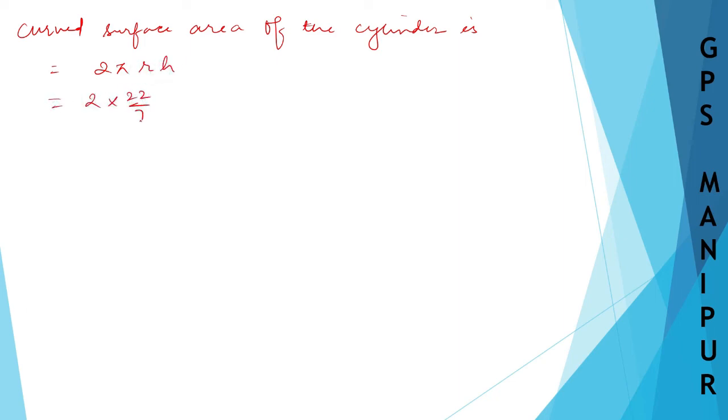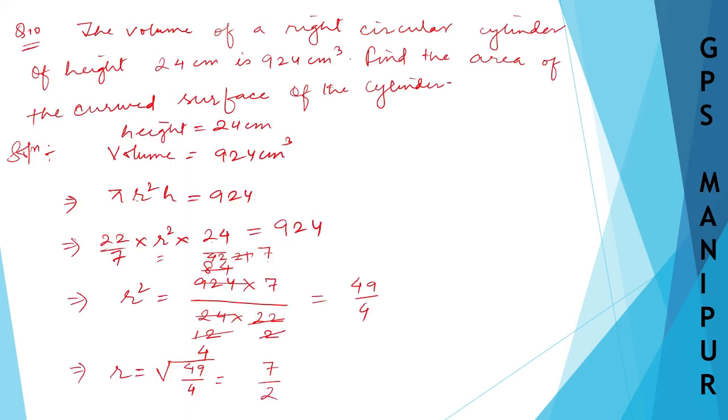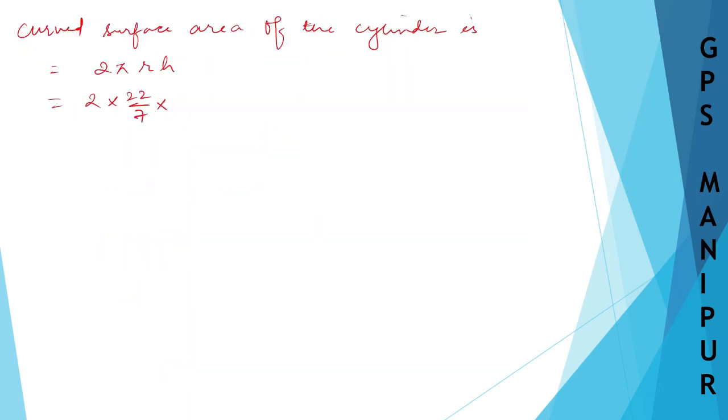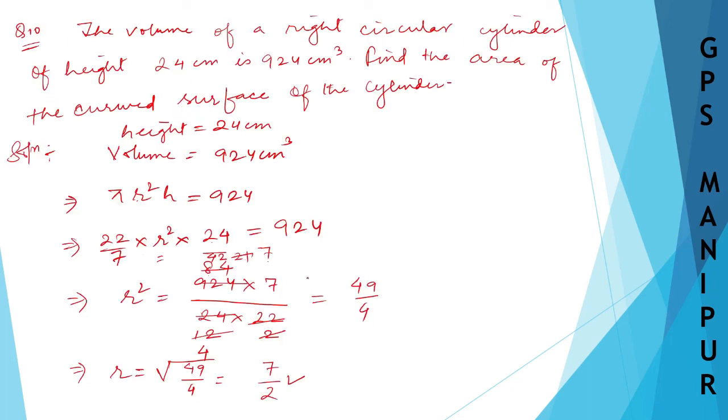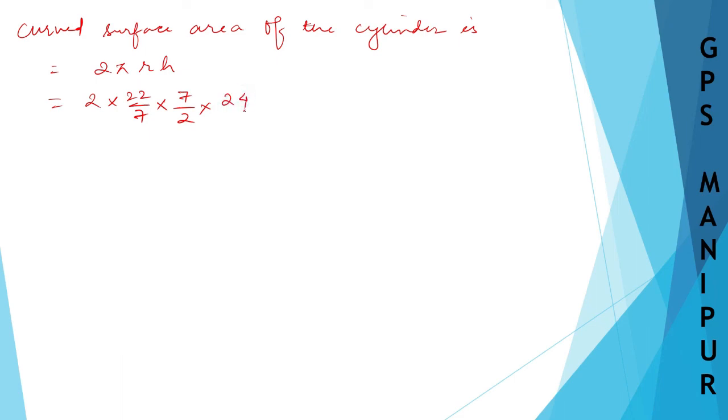So 2 × (22/7) × r, and we found r to be 7/2, so × (7/2) × h. The height is 24 cm, so × 24.